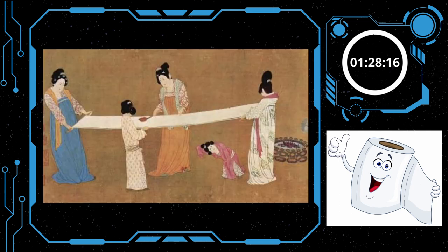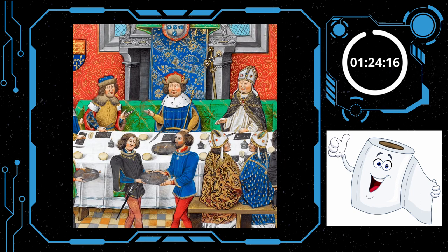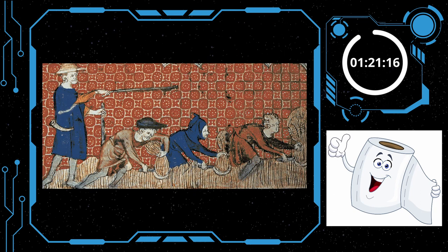By the 14th century, the Chinese were already manufacturing millions of sheets of toilet paper. Elsewhere, wealthy people would use wool, lace, or hemp, while the not-so-wealthy used items like leaves, stones, moss, seashells, corn cobs, or just their hands.